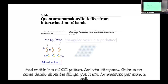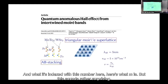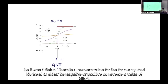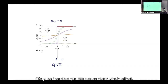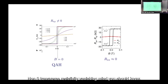At filling of four electrons per moiré cell, something rather surprising was found. At zero field there is a non-zero value for R_xy, which can be trained to be negative or positive by reversing the field — a quantum anomalous Hall effect. R_xx is approximately zero, consistent with quantum anomalous Hall physics: non-zero transverse resistivity and vanishing longitudinal resistivity.